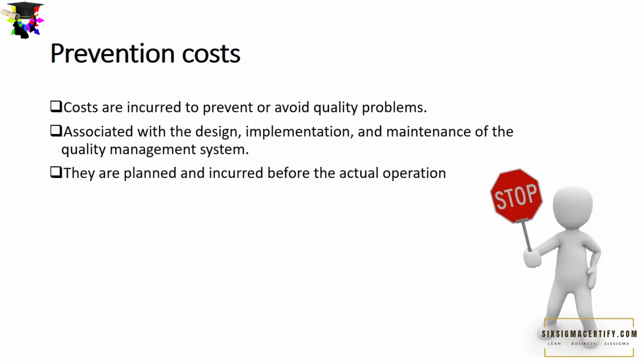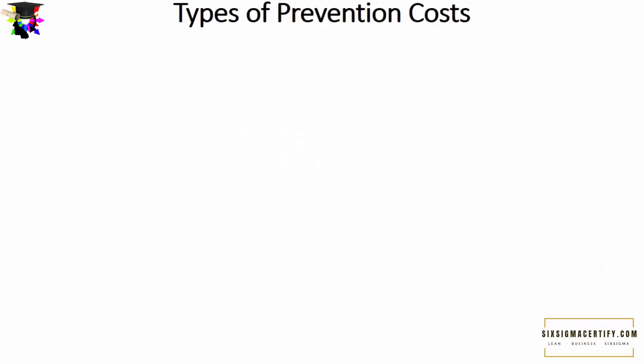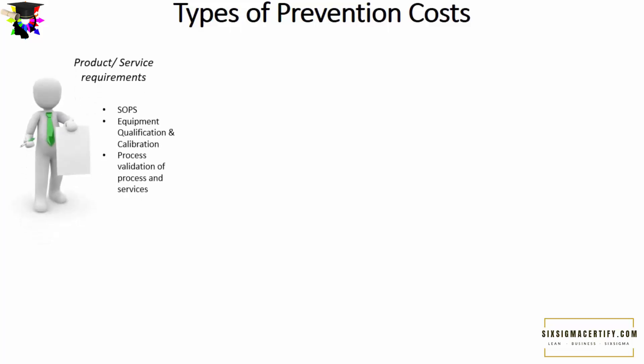The first type of prevention cost covers products and service requirements, including SOPs or Standard Operating Procedures. SOPs explain the correct process of doing any work or the correct way of handling materials or processes. They are prepared and verified by senior faculty of the organization, training is provided to all members, and the SOPs are placed in close proximity to the relevant machine, material, or process.